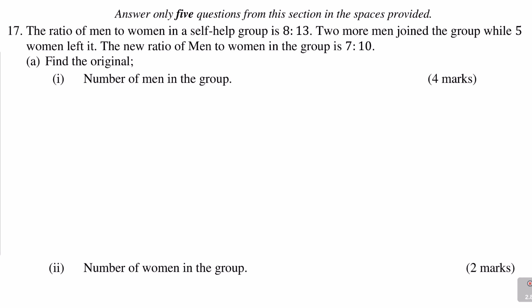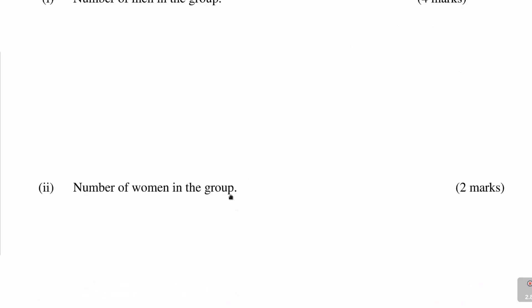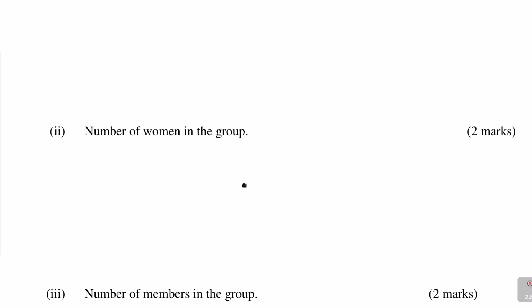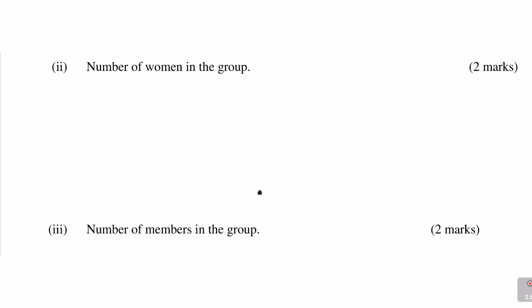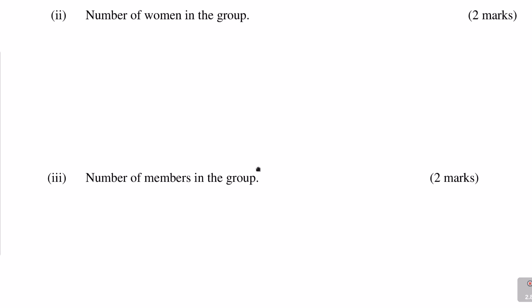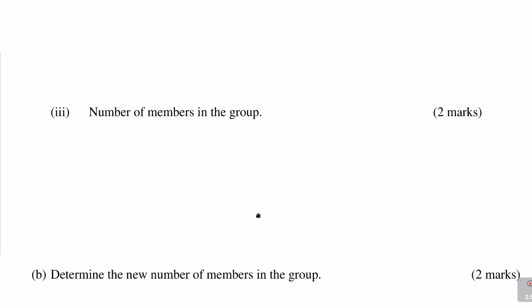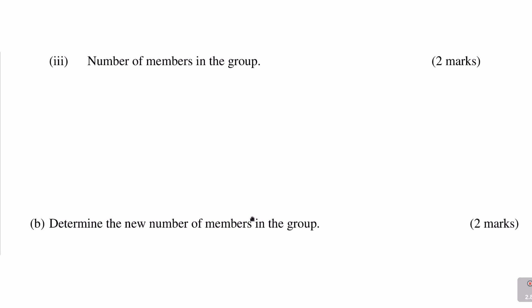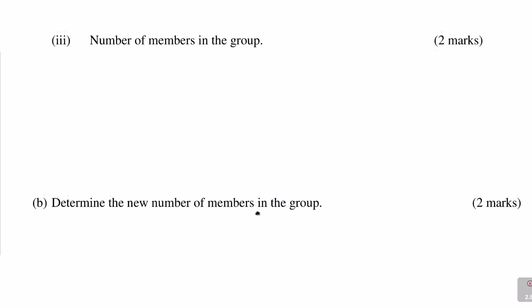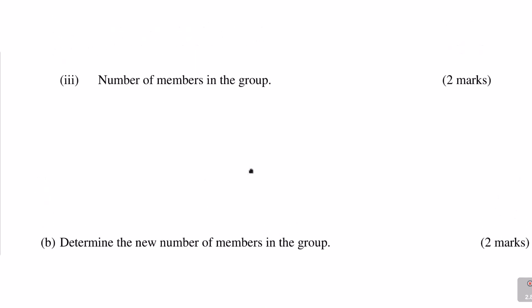The ratio of men to women in a self-help group is 8 to 13. Two more men joined the group while five women left it. The new ratio of men to women in the group is 7 to 10. Part A: find the original number of men (4 marks), the number of women (2 marks), and the number of members in the group (2 marks). Part B: determine the new number of members in the group.